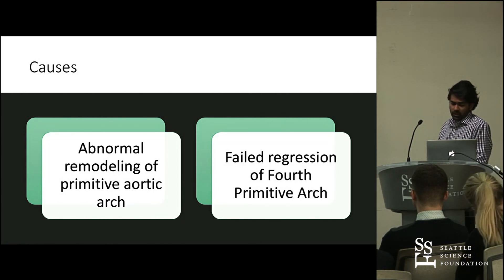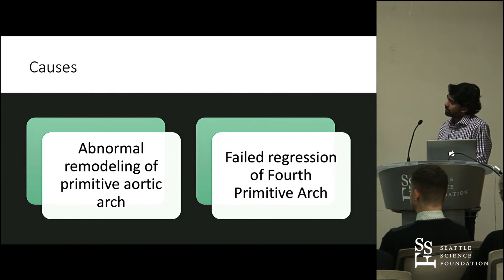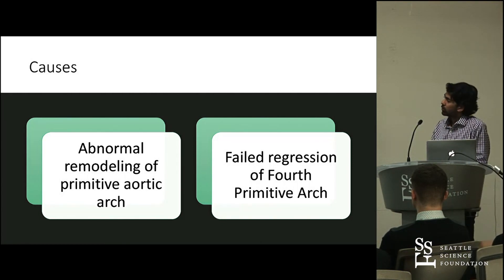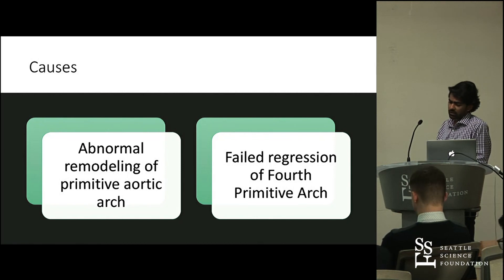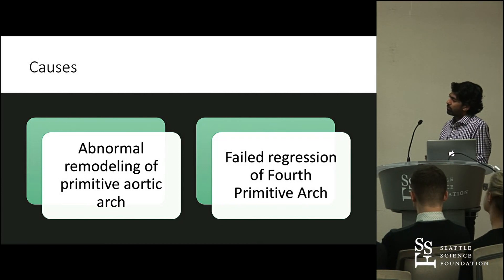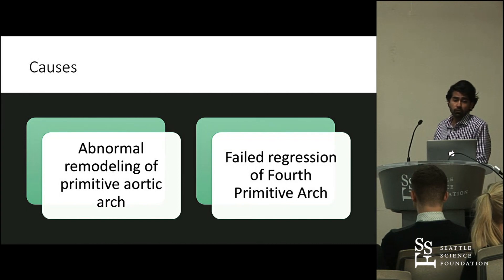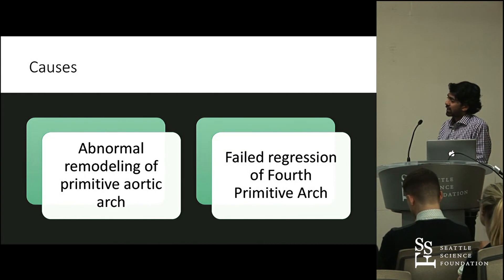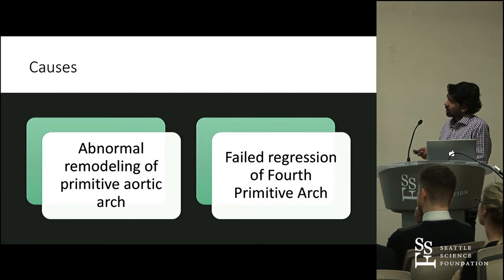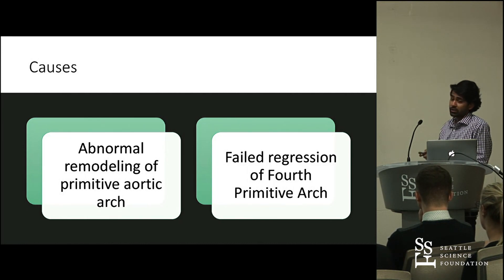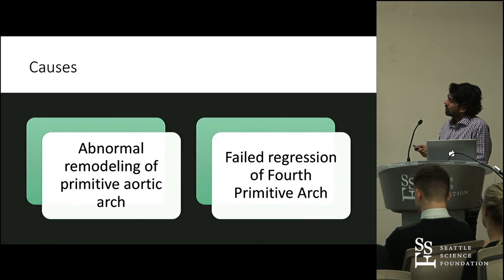The causes are mainly embryological. The mechanism is understood but not certain why it occurs. Specific to the double aortic arch, there is primitive remodeling of the fourth aortic arch branch — the right side fails to regress, causing a posterior branch to form, while the left side remains and creates the anterior branch. Other variants are caused by the same failed regression of different parts of the fourth primitive arch, and sometimes the third and sixth primitive arches are also referenced.